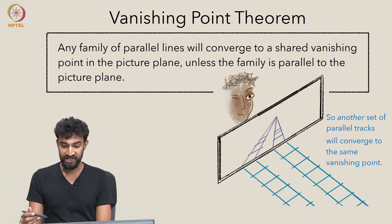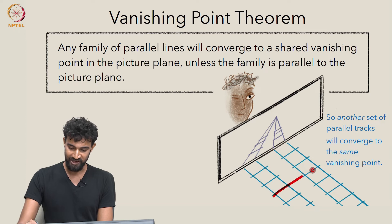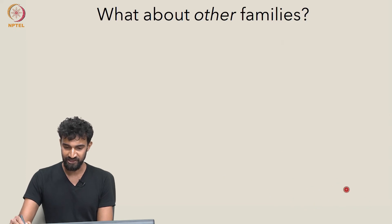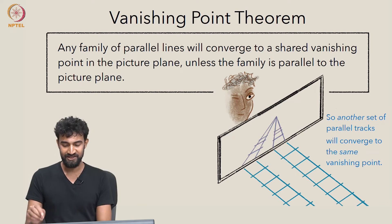And the only exception is when that family is parallel to the picture plane, which is what we're seeing with these horizontal railway ties here. They're all parallel to the picture plane, so as a result, they continue to appear parallel in the picture plane.